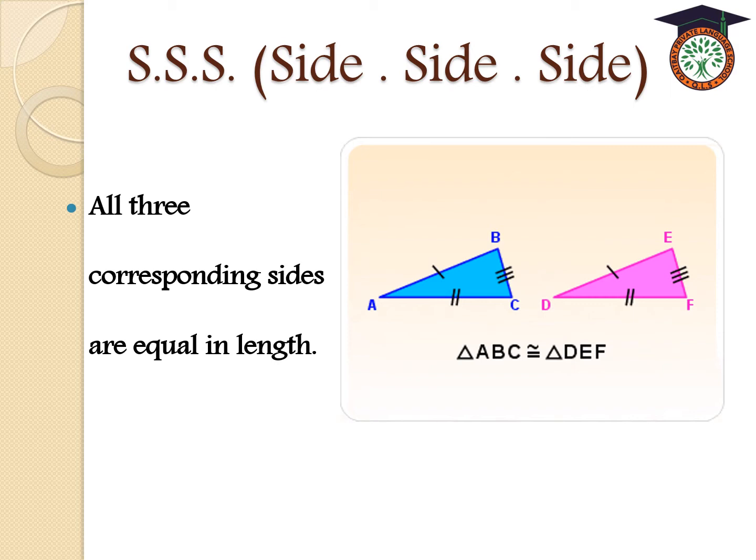In the first triangle, colored blue, AC corresponds to DF in the pink triangle. The corresponding side AB is DE, and the last side BC corresponds to EF. So the three corresponding sides are equal in length, therefore triangle ABC is congruent to triangle DEF.